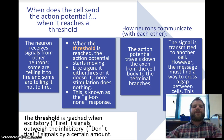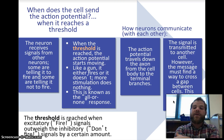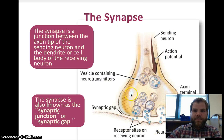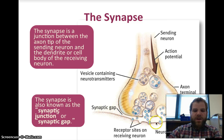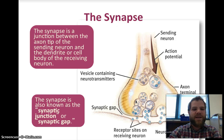The action potential travels down the axon from the cell body to the terminal branches, and the signal is transmitted to another cell. However, the message must find a way to cross a gap between the cells. This gap is called the synapse — also known as the synaptic junction or synaptic gap. It's the junction between the axon tip of the sending neuron and the dendrite or cell body of the receiving neuron.